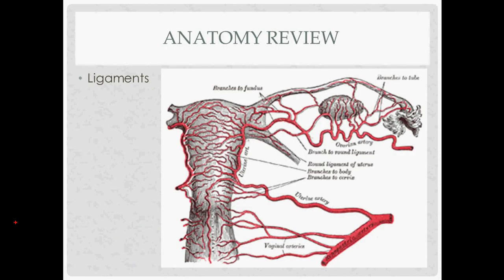The final layer of anatomy involves the ligaments. The infundibulopelvic ligament carries the ovarian blood supply — previously known as the suspensory ligament of the ovary. The uterine artery runs in the cardinal ligament.